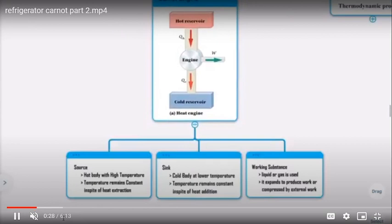The Carnot engine has three main parts: a heat reservoir (source), an engine, and a cold reservoir (sink). There is also a working substance. So the three components are: source, sink, and working substance.